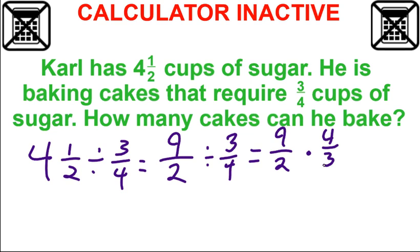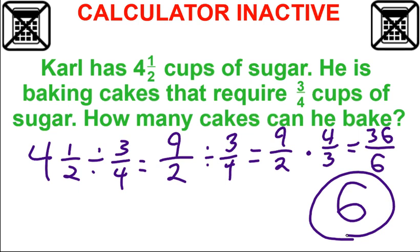Then when we multiply, straight across the top, straight across the bottom. Nine times four is 36. Two times three is six. One where you type it in, that's probably going to be good enough, unless it specifically says to simplify. However, that's easy to simplify. That's just division, right? So what's 36 divided by six? Six. So that means Karl here could make six cakes.